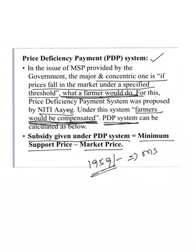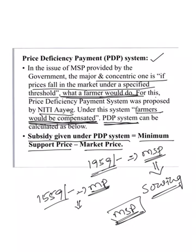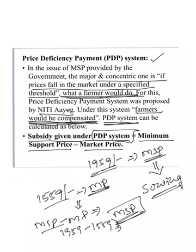For example, if the government fixes MSP for rice at 1959 rupees per quintal — fixed before sowing — and after harvest, the market price falls to 1559 rupees per quintal, then under the PDP system, the farmer is compensated: 1959 minus 1559 equals 400 rupees per quintal. This 400 rupees is given as compensation by the government to the farmer.